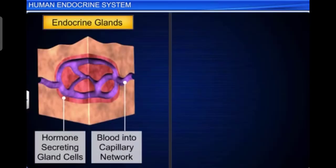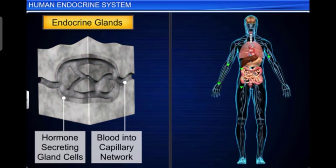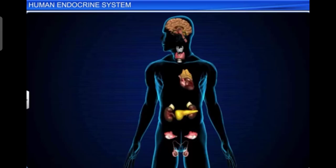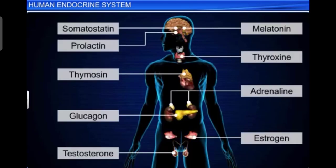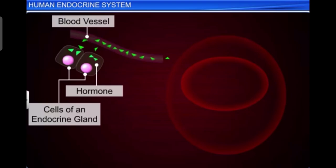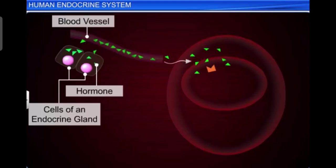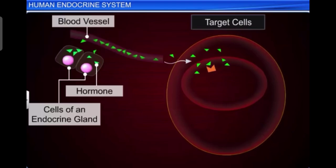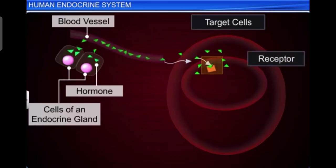Hormones are directly secreted into the blood and transported to distant parts of the body. Endocrine glands lack ducts and are hence called ductless glands, and their secretions are called hormones. Hormones are non-nutrient chemicals which act as intercellular messengers, produced in trace amounts by glands and neurons. They are soluble in water and blood. Hormones produce their effects on target cells or tissue by binding to specific proteins called hormone receptors located in the target cells.